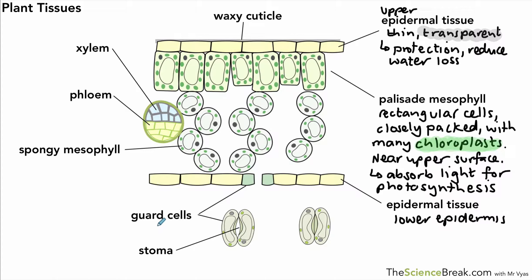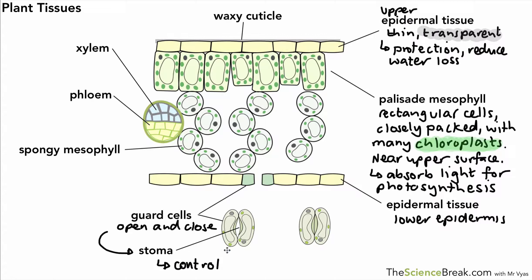The epidermal tissue at the lower end — often called the lower epidermis — has a thinner or no waxy cuticle, but you'll also find guard cells there. These can swell or shrink, and when they do they open or close gaps called stomata. Stoma is the singular form; stomata is the plural. Stomata control gas exchange — that's carbon dioxide and oxygen moving in and out of the leaf — and they also help to control water loss.